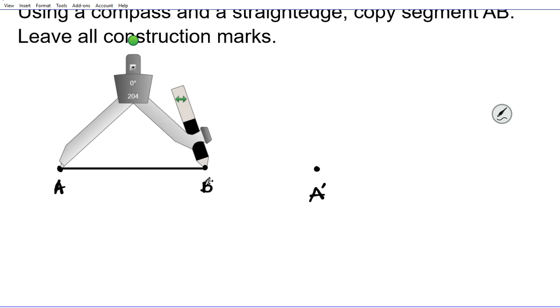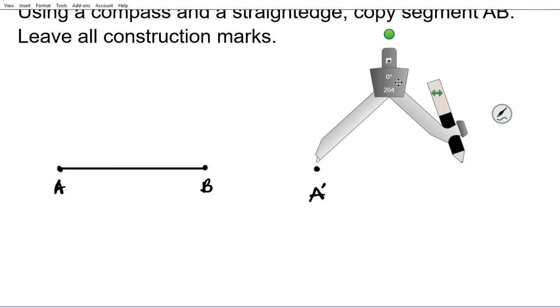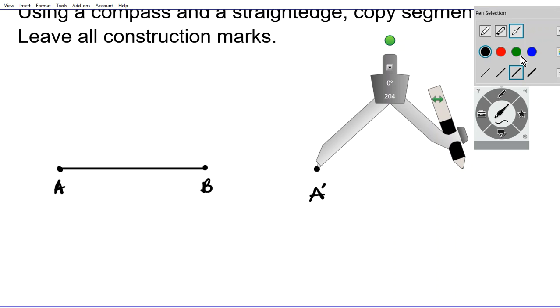So what are we going to do with this length that we have just created? We're going to copy it onto the new point A prime. Alright, so we're going to take our compass, place the edge on A prime, and then we're going to create an arc here. Okay, so let's make it blue.